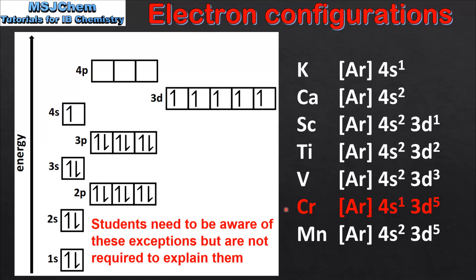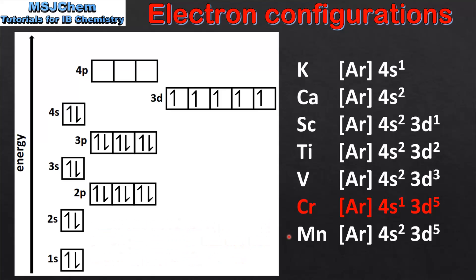When we get to chromium we have our first exception to the Aufbau principle. The electron configuration is Ar4s1 3d5, so chromium does not fill according to the Aufbau principle. Instead we have one electron in the 4s sub level and 5 electrons in the 3d sub level. Next we have manganese which is Ar4s2 3d5, so for manganese we have 2 electrons in the 4s sub level and 5 electrons in the 3d sub level.